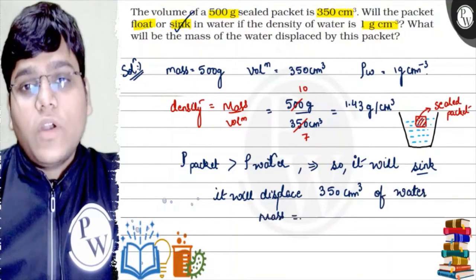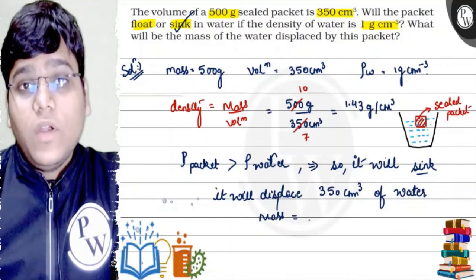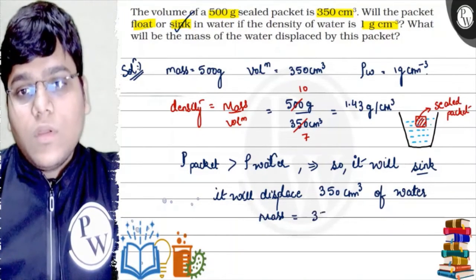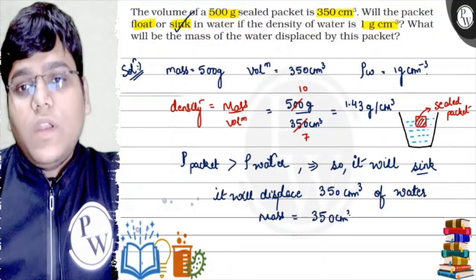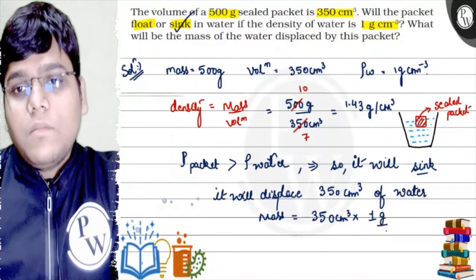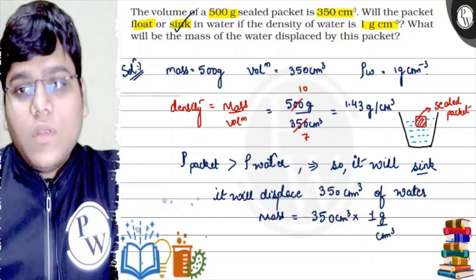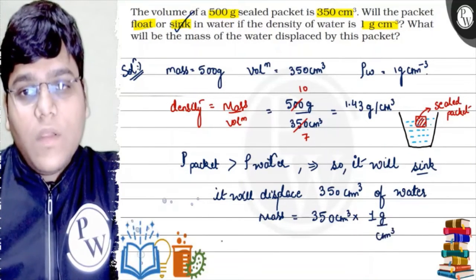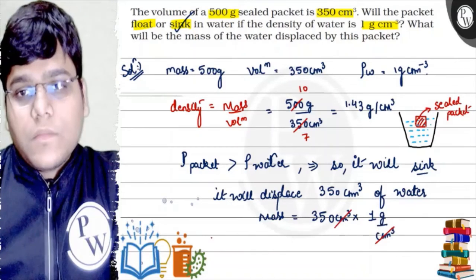How much is it? Mass of the water displaced will be. Mass is what? Density into volume. So, how much is it? 350 cm³ into density. How much is it? 1 gram per cm³. From cm³ to cm³ cancel.